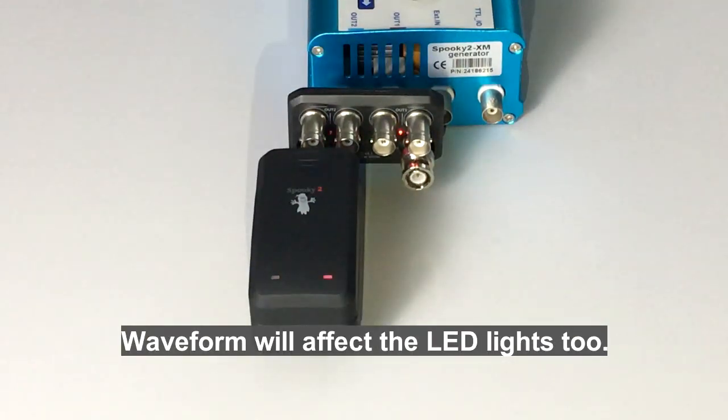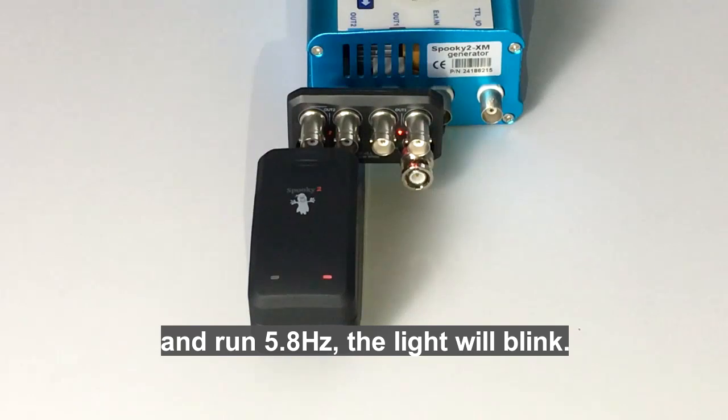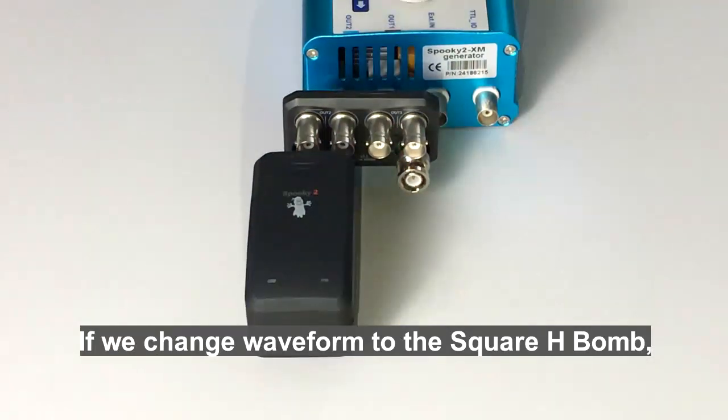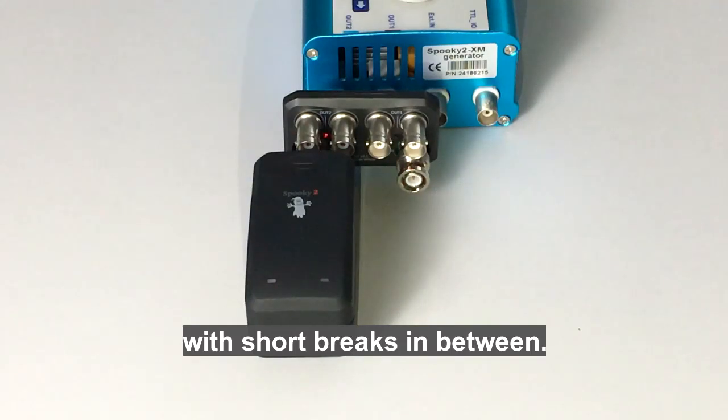Waveform will affect the LED lights too. If you choose square wave and run 5.8 hertz, the light will blink. If we change waveform to square H-bomb, the LED lights will be flashing with short breaks in between.